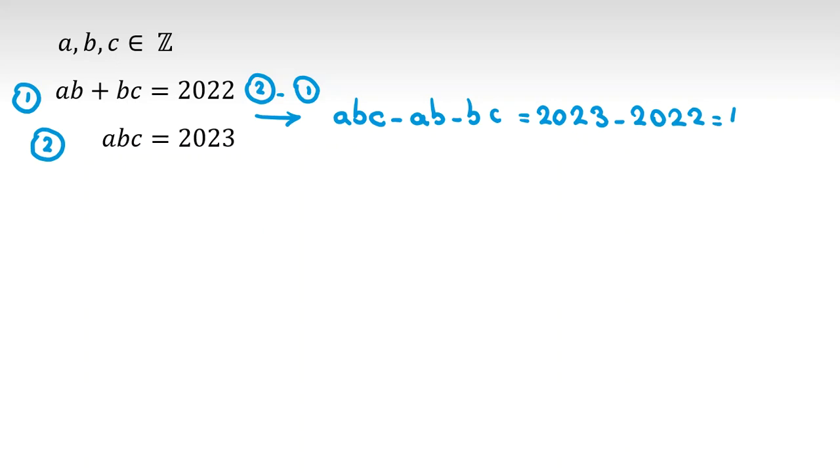Right hand side will be 2023 minus 2022, which is 1. In the next step, I factor from B here on the left hand side. B times AC minus A minus C equal to 1.